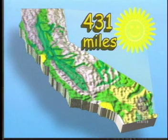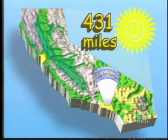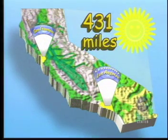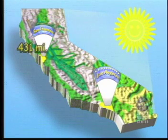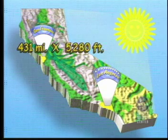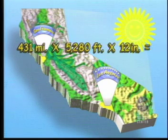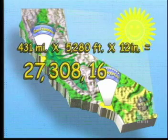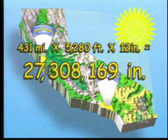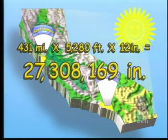Here's an example. It's about 431 miles from Los Angeles to San Francisco. To convert these miles into inches, simply multiply the number of miles — 431 — by the number of feet in a mile — 5,280 — by the number of inches in a foot — 12. 431 miles converts to 27,308,160 inches. Whew!